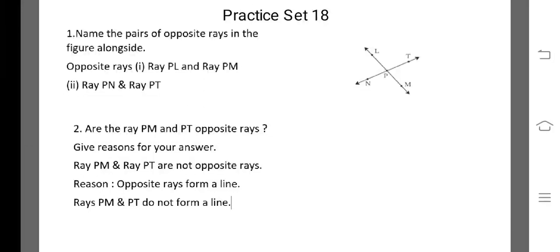Are the rays PM and PT opposite rays? Give a reason for your answer. From the figure, we can see that PM and PT are not opposite rays, because opposite rays must form a straight line. But Ray PM and Ray PT do not form a line.